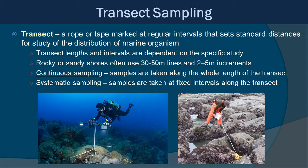Another technique is the transect, which is a rope or tape marked at regular intervals that sets a standard distance for studying the distribution of marine organisms. Essentially, we're looking at a long meter tape and measuring out distances along a particular line. This can be combined with quadrat sampling within the transect. Transect lengths and intervals depend on the specific area of study — rocky and sandy shores typically use 30 to 50 meter lines with two to five meter increments. Continuous sampling means samples are taken along the whole length of the transect, whereas systematic sampling means samples are taken at fixed intervals.